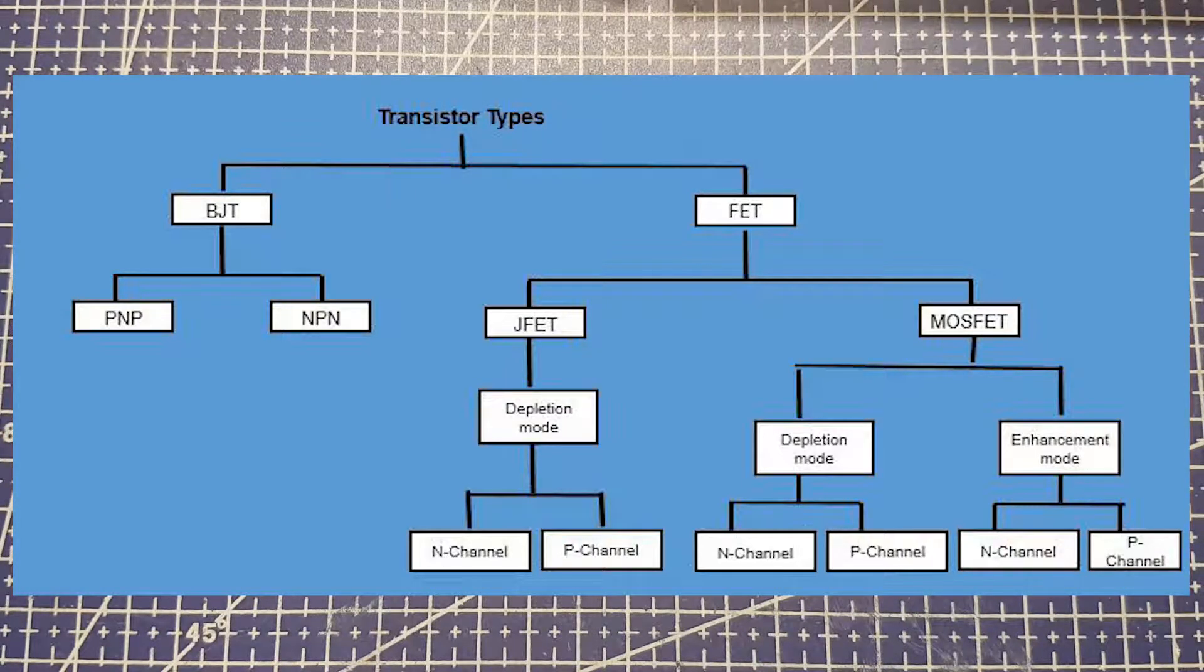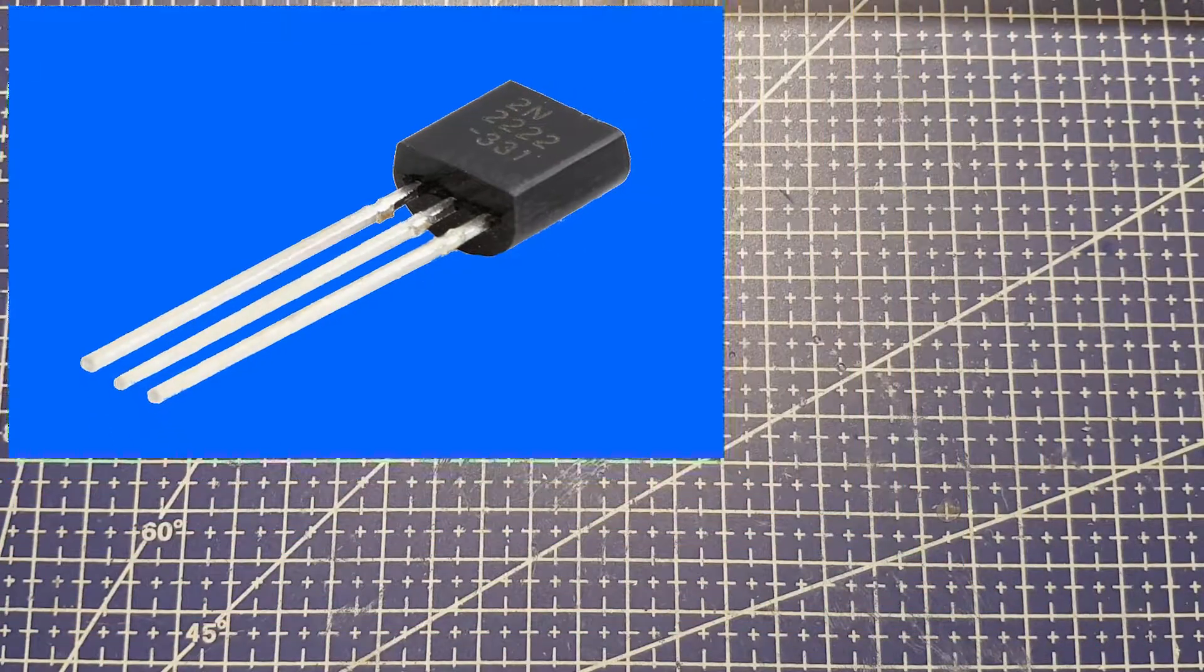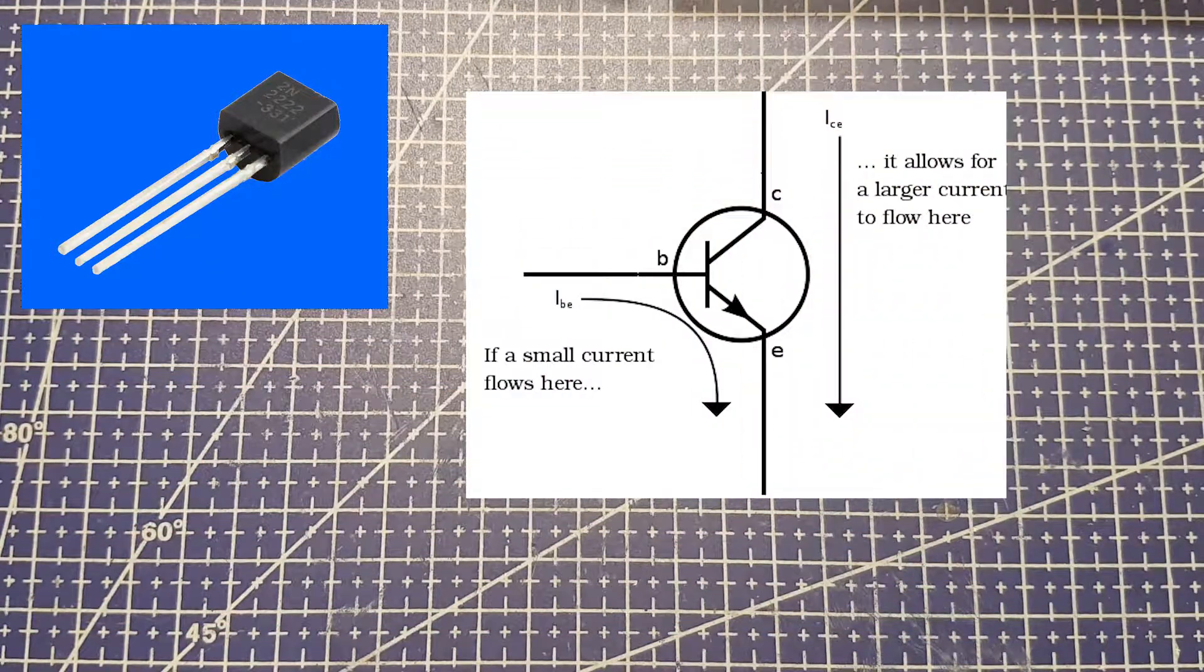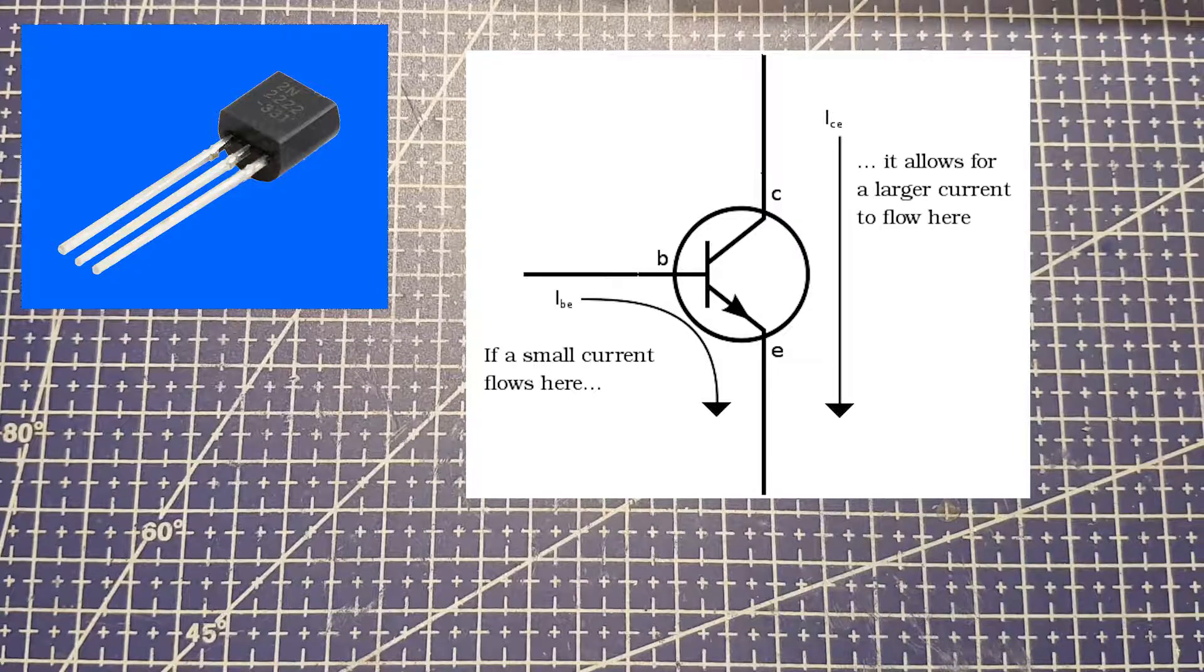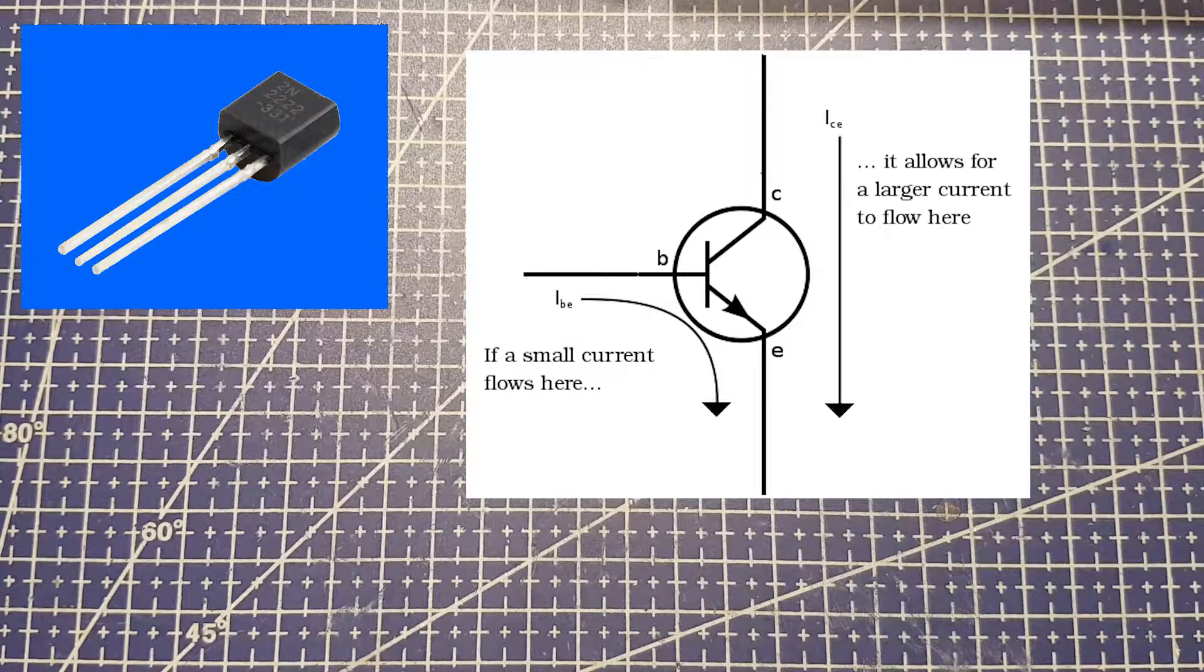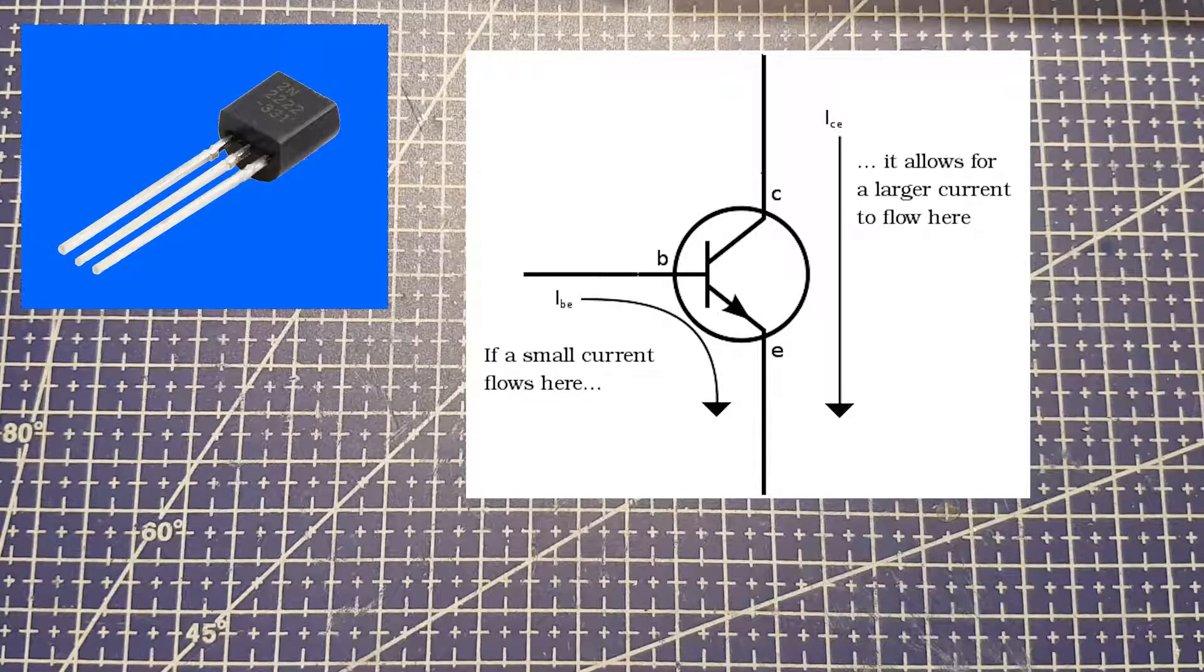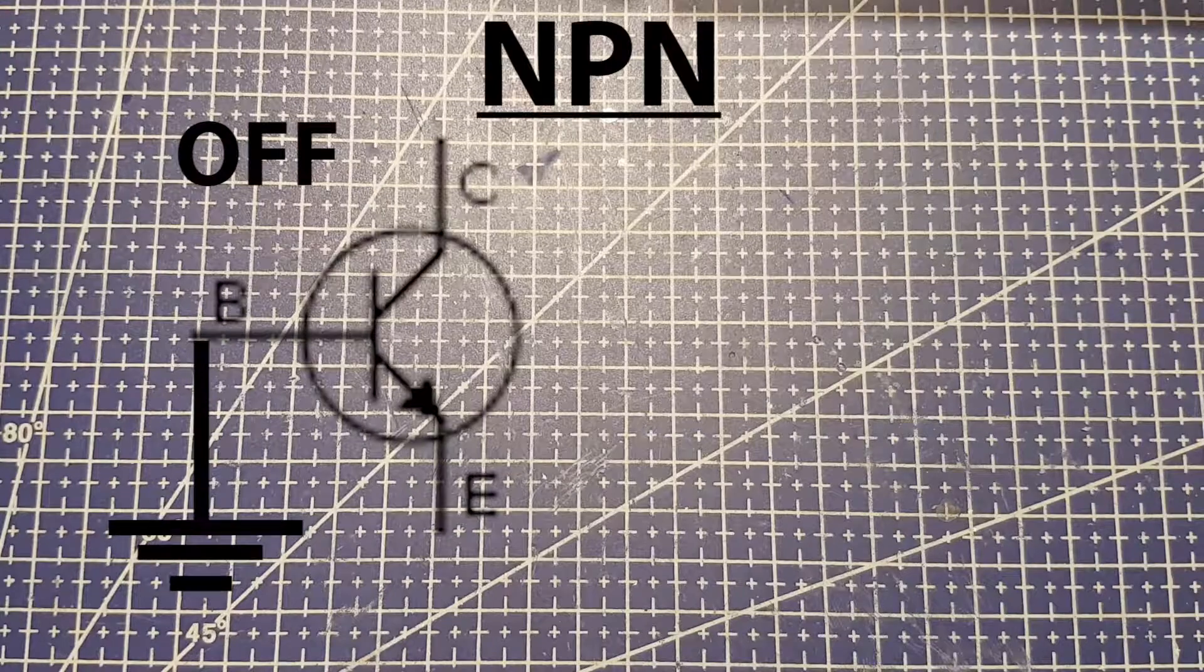It's a bipolar junction transistor. The bipolar junction transistor has three terminals: a base, a collector, and emitter. These transistors are activated by current. So applying a small amount of current at the base of the transistor will allow current to flow from the base to the emitter and also from the collector to the emitter. With no current at the base, no current flows from the collector to the emitter.